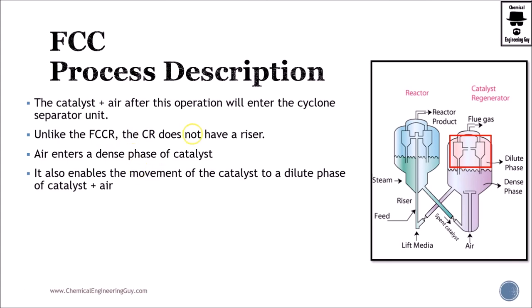The catalyst plus air after this operation will enter this cyclone operation. So it's pretty similar to that of the reactor. But in this case, we don't have connection between the riser and the cyclones. Air enters a dense phase of the catalyst. So as you can see here, air will go here. And it will also enable the movement of the catalyst to a dilute phase catalyst air. So here, right here, we have our catalyst and air.